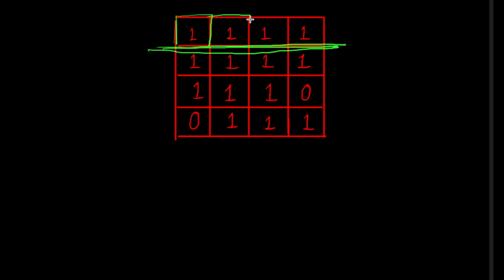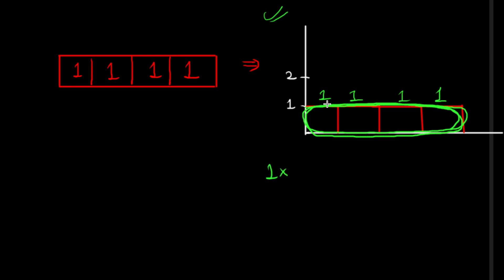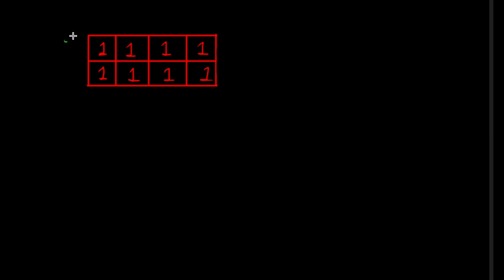When we consider the first row as a base, each cell with value one represents the height of a bar in the histogram. Since all values are one, the histogram has bars of height one. The maximum area that can be formed using this histogram is one multiplied by four columns, giving a maximum area of four.